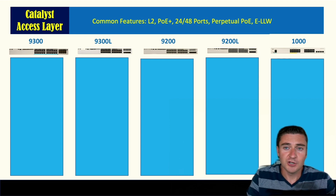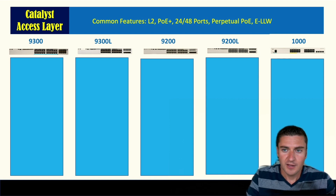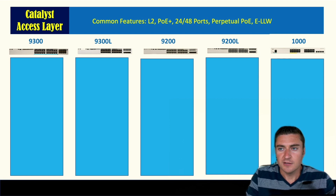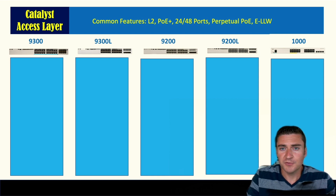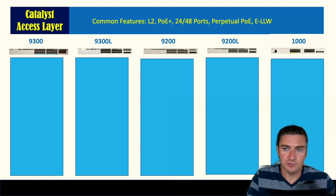The last common feature is the enhanced limited lifetime warranty. That's really good if you're not purchasing SmartNet or if SmartNet lapses. When you buy the switch, you get 90 days of TAC support, and if the switch has a problem down the road, the enhanced limited lifetime warranty allows you to RMA it — you call Cisco, tell them it's broken, and they send you a new switch.